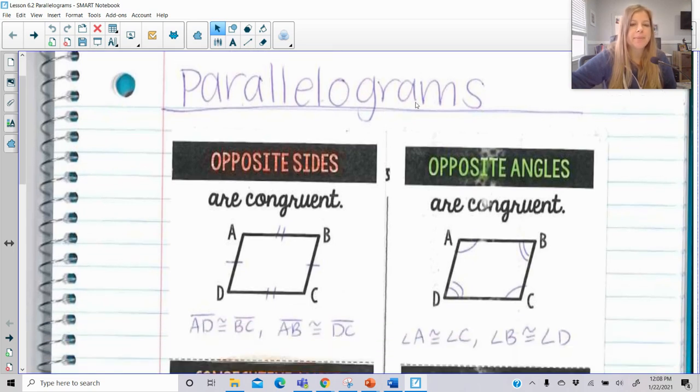So first off, we need to know all the properties about parallelograms, and I've got six of them for you here. First of all, opposite sides are congruent. So when you have a parallelogram, which is a particular quadrilateral by the way, opposite sides are congruent to each other. So here I have marked up that segment AD is congruent to segment BC, segment AB is congruent to segment DC.